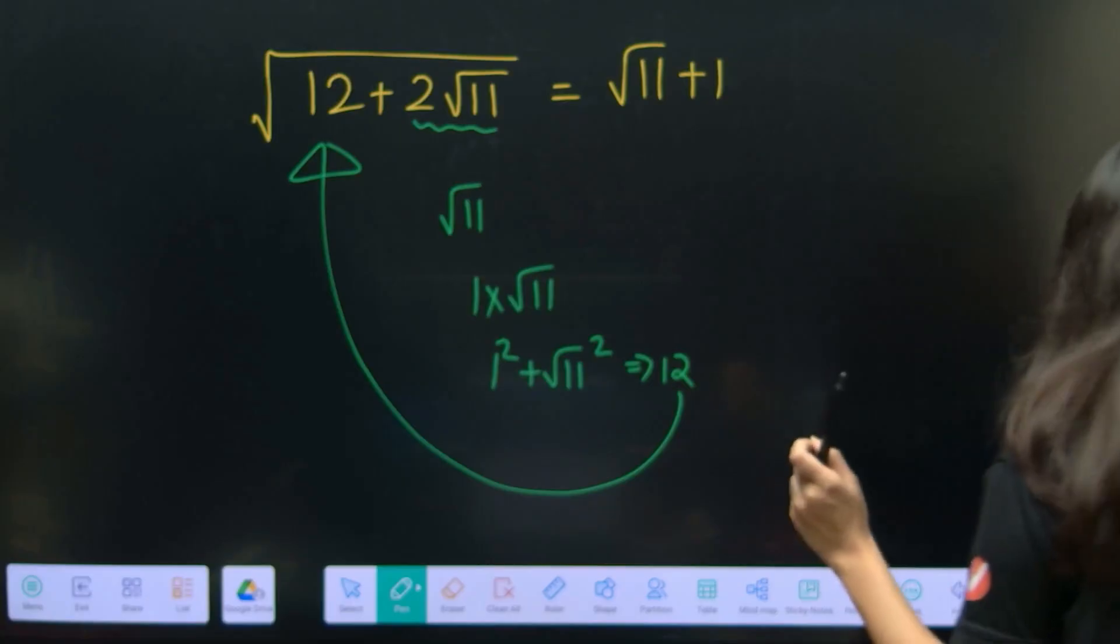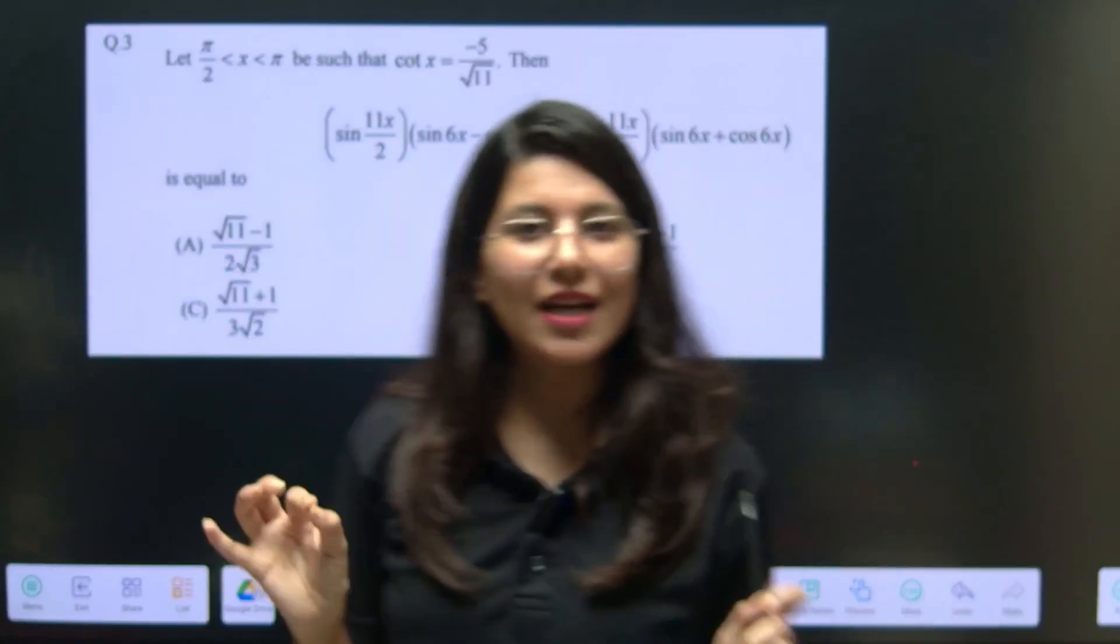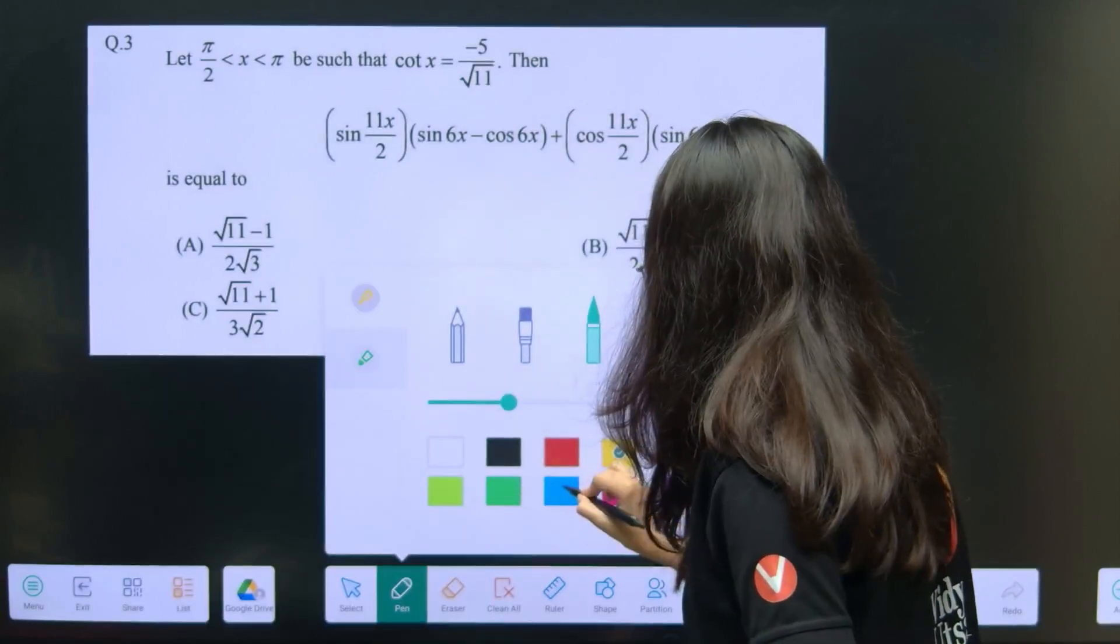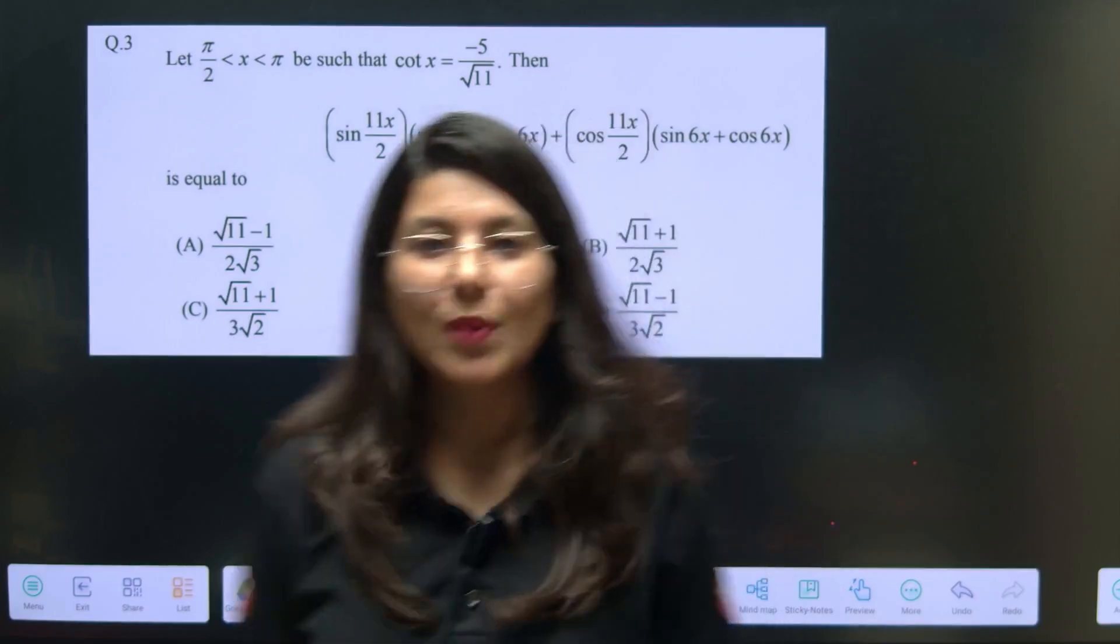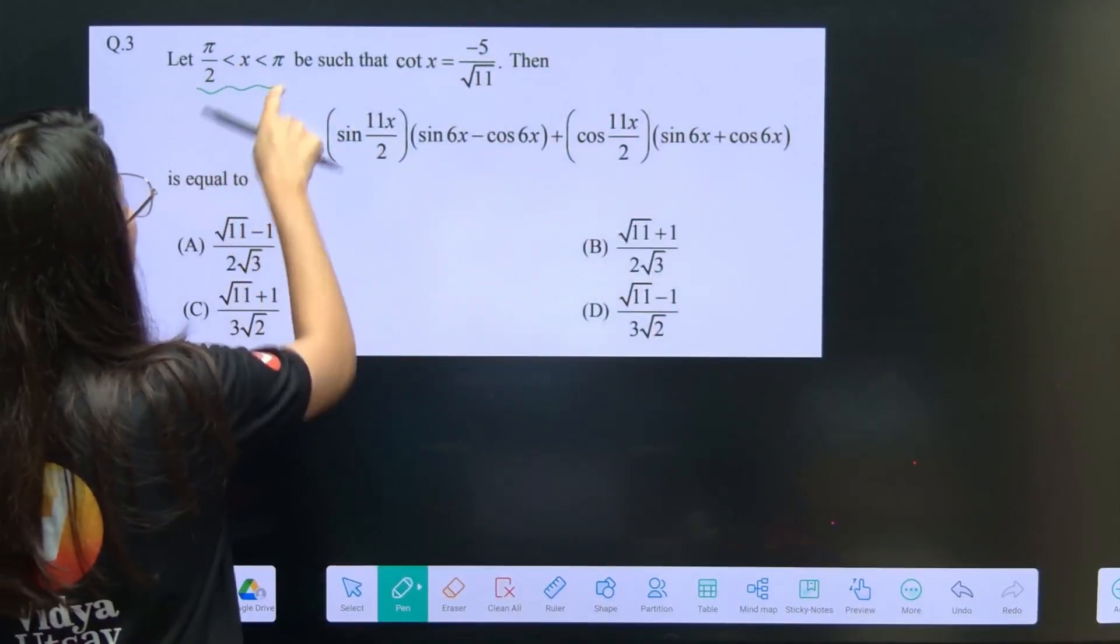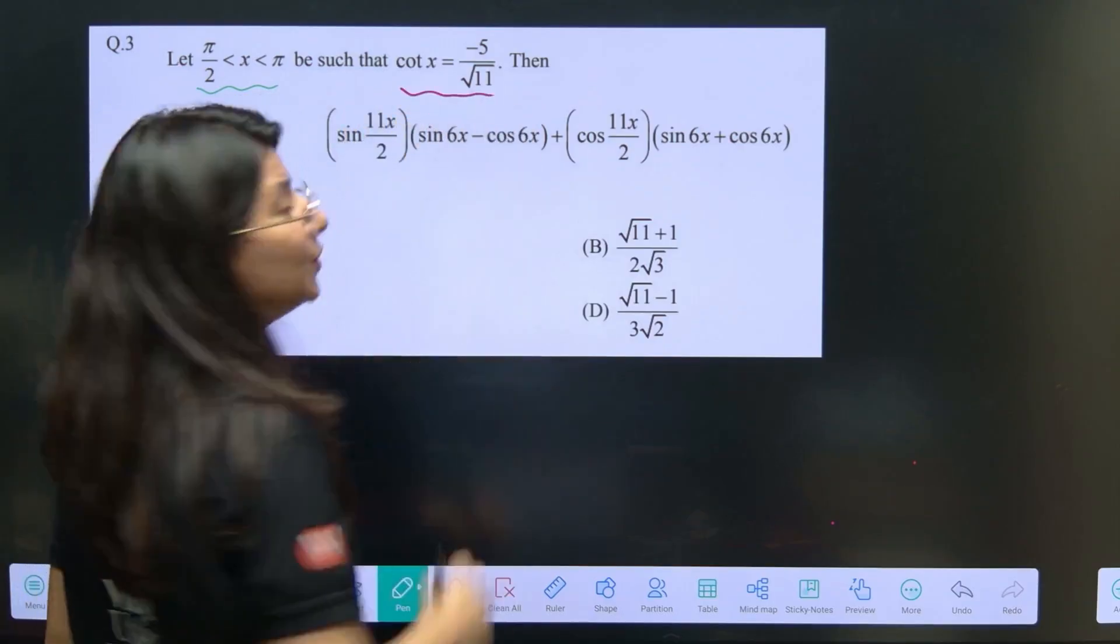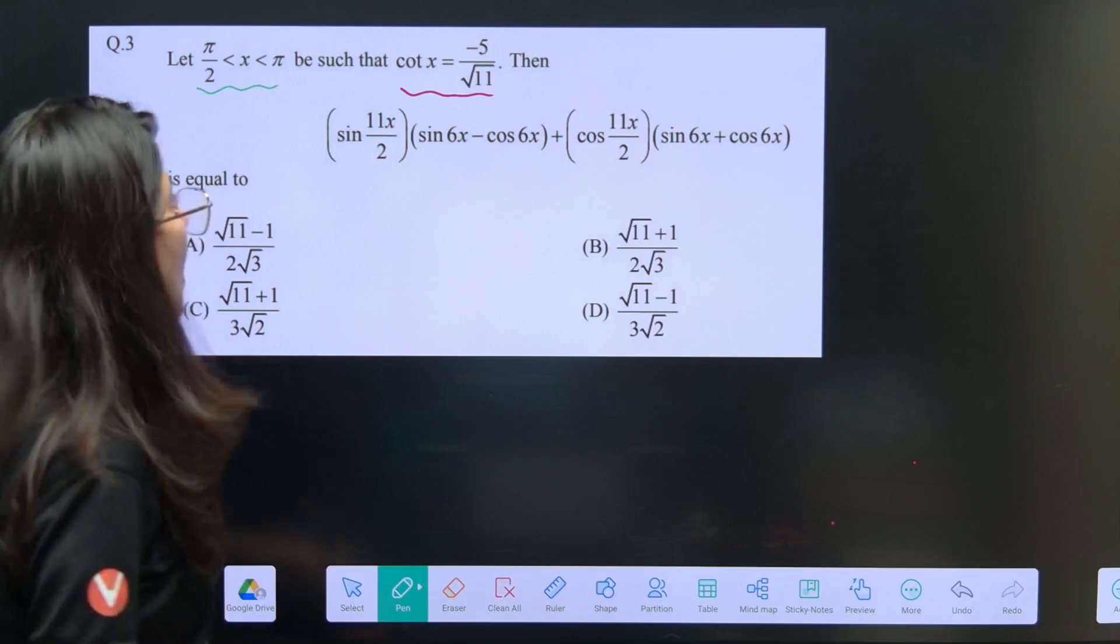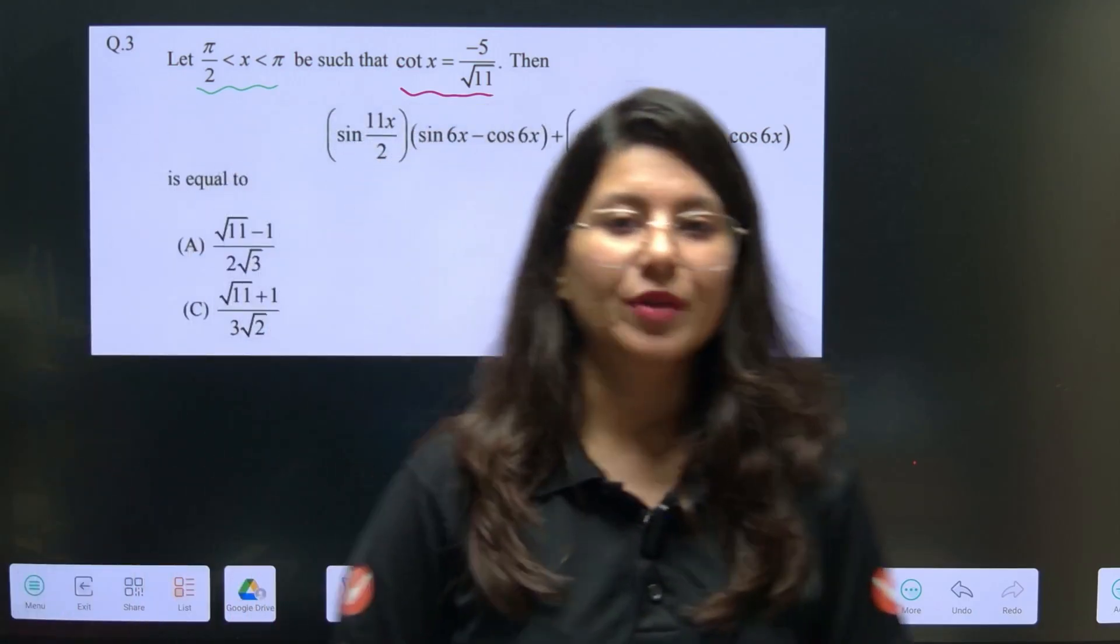So now that you have learnt this ninja technique, we can peacefully solve the JEE Advanced question. Now I will show you that how basics are so important in JEE Advanced. First of all, can you see that X is given which is in second quadrant. Cotangent X is also given to you. X is in second quadrant, cotangent X is given, and now this is the expression whose value we are looking for.